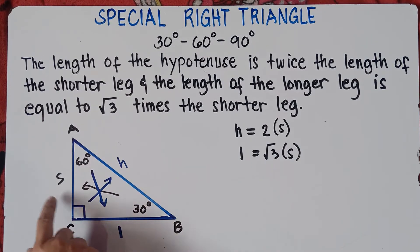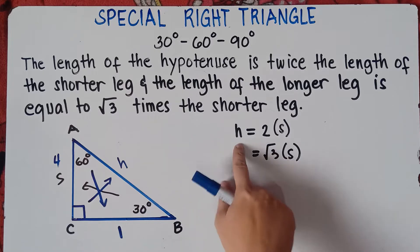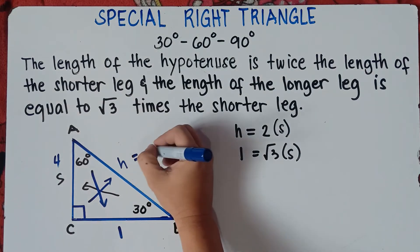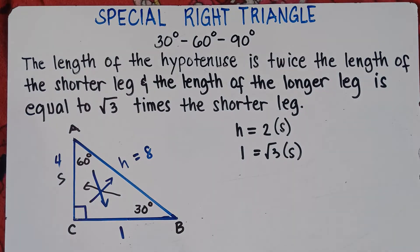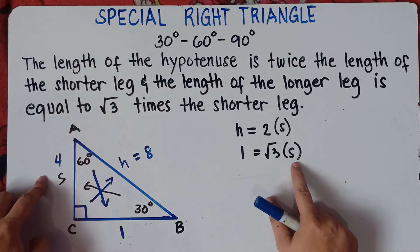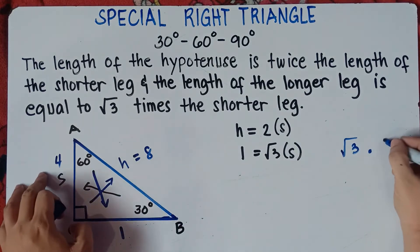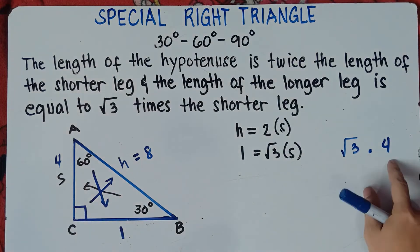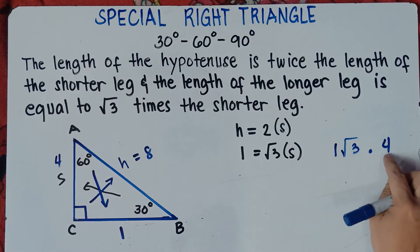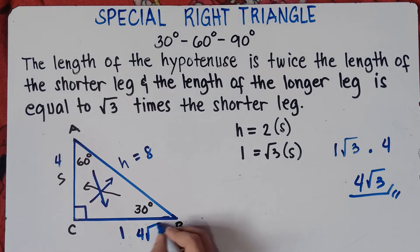Let's give an example. If the shorter leg is 4, to find the hypotenuse, simply multiply by 2 — so the hypotenuse will be 8. For the longer leg, multiply the shorter leg by square root of 3. Do not multiply 3 and 4 directly, because only the number outside the radical is multiplied: 1 times 4 is 4, so the longer leg is 4√3.